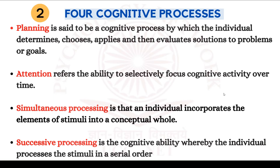Successive processing is the cognitive ability whereby the individual processes stimuli in serial order. If I say 7, 8, 2, 9 and tell you to remember that, you remember it as 7, 8, 2, 9 — successively, in that order. That ability requires successive processing.